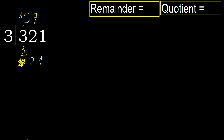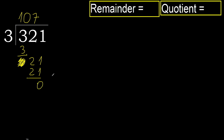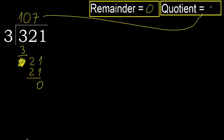3 multiplied by 7 is 21 — 21 is not greater. Subtract, remainder 0. Next — that is not a number, therefore finish. So 321 divided by 3 equals 107.